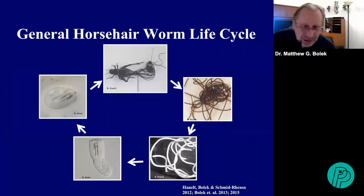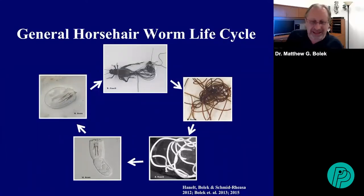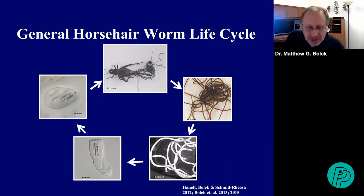They're called horse hair worms because they resemble hairs on horses. At one time, people thought horse hairs that fell into troughs became alive and were these worms, before that was disproven. To identify them you actually have to look at their cuticle with SEM — they're quite beautiful for parasites. From an insect perspective, they're most famous because in the juvenile stage they're parasites of terrestrial arthropods, including beetles in Europe, crickets and grasshoppers in North America, and roaches and mantids in the tropics.